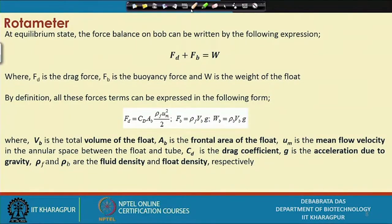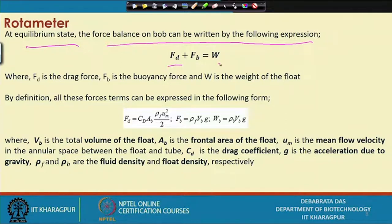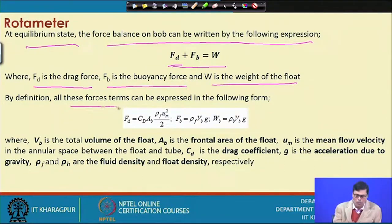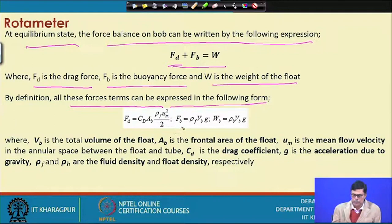For the equilibrium state, the force balance on the float is: F_D + F_B = W, where F_D is the drag force, F_B is the buoyancy force of the float, and W is the weight of the float. Under equilibrium conditions these must be equal. F_D can be expressed as: F_D = C_D × A_B × ρ_F × U_M² / 2.